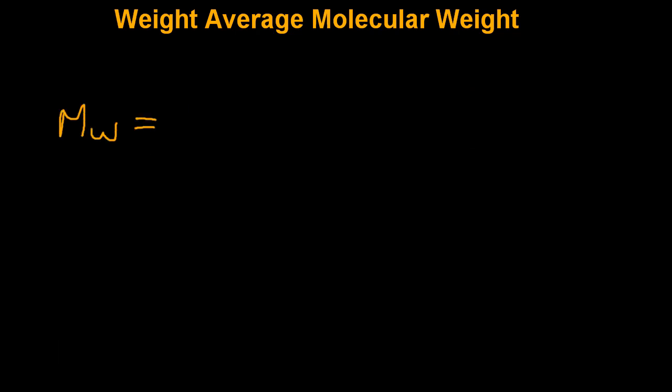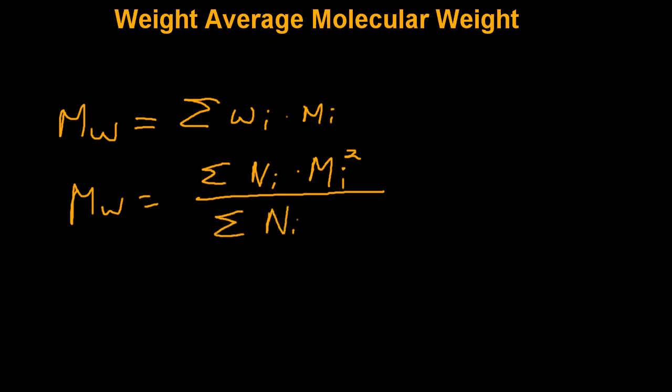Mathematically, the weight average molecular weight of a polymer sample is denoted two ways: either as the sum of the weight fraction of chains with a molecular weight Mi times their respective molecular weight, or as the sum of the number of chains with a molecular weight Mi times their molecular weight squared over the sum of the number of chains with a certain molecular weight times their respective molecular weight. Let's try using these equations in a practice problem.